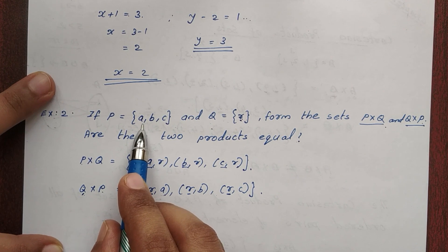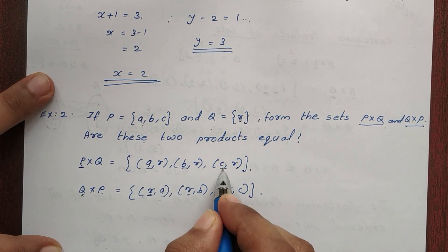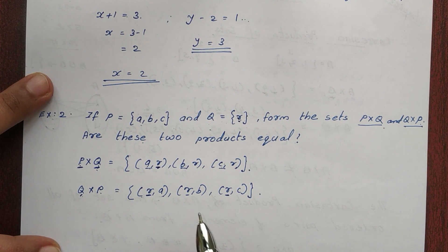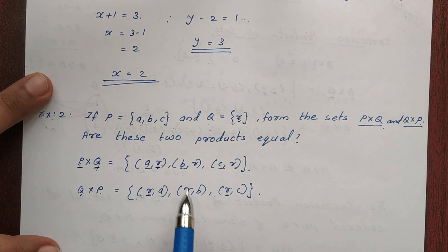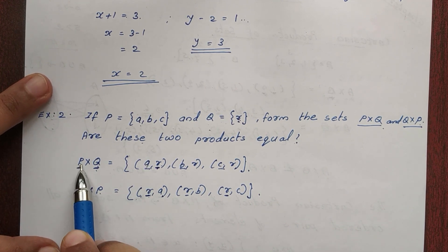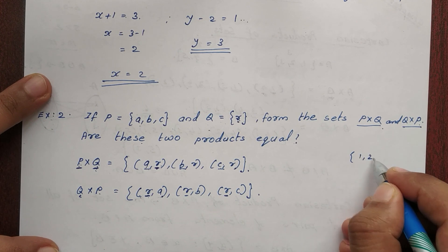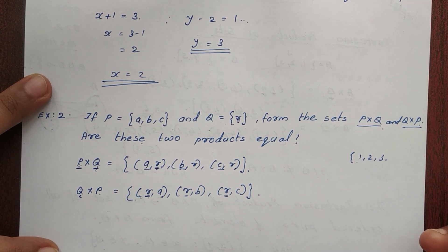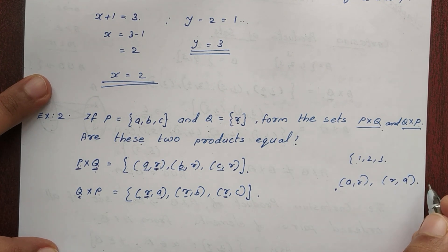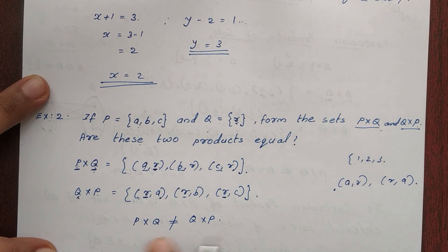The first elements of P×Q are A, B, C — that is set P. The first elements of Q×P are all R — that is set Q. So P×Q is different from Q×P. Therefore P×Q is not equal to Q×P.